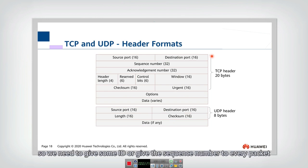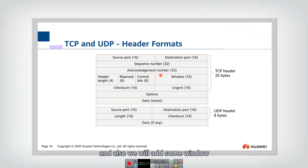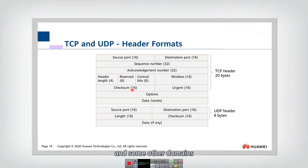Because TCP needs to provide reliable data transfer, it requires a sequence number assigned to every packet. TCP also includes a window field used for flow control and congestion control, along with other fields. That is the header format for TCP.